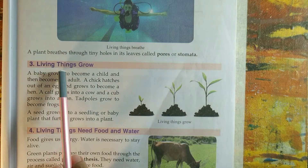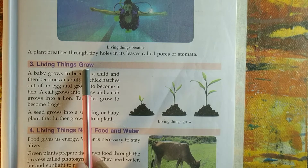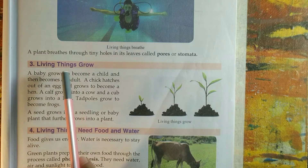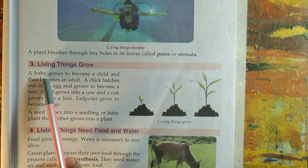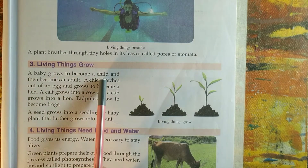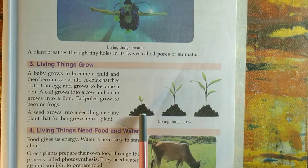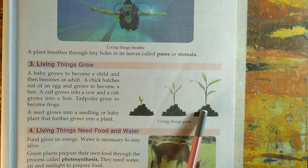Third feature: all living things grow, get old and die. For example, a baby grows to become a child and then becomes an adult. In the same way, a baby plant grows into a bigger plant.